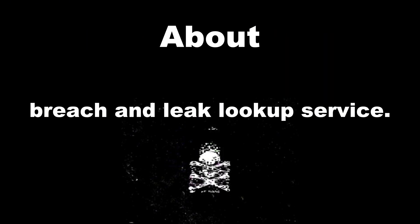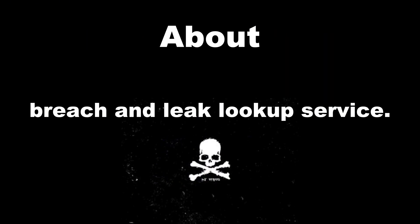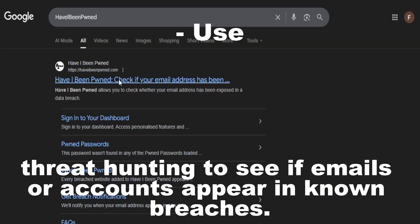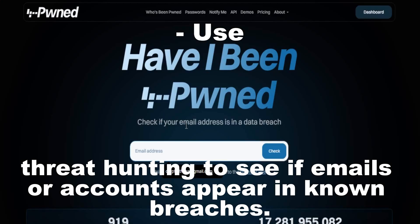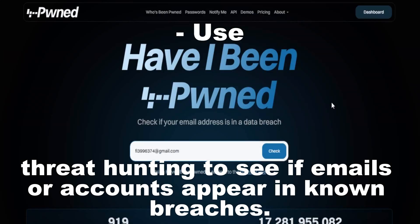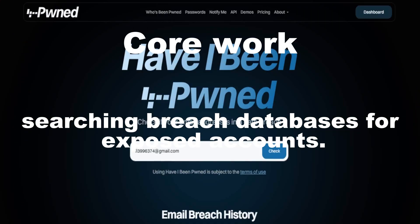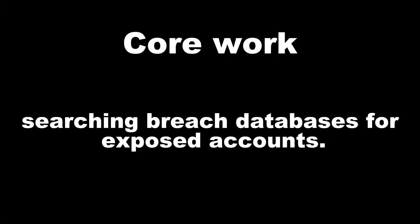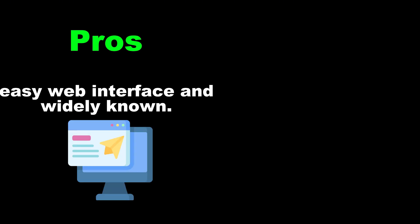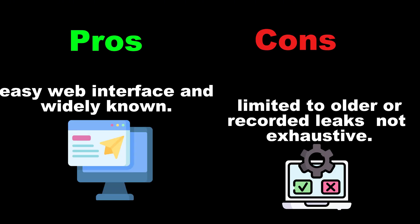Tool 7: Have I Been Pwned. About: breach and leak lookup service. Use: threat hunting to see if emails or accounts appear in known breaches. Core work: searching breach databases for exposed accounts. Category: breach search. Pros: easy web interface and widely known. Cons: limited to older or recorded leaks — not exhaustive.